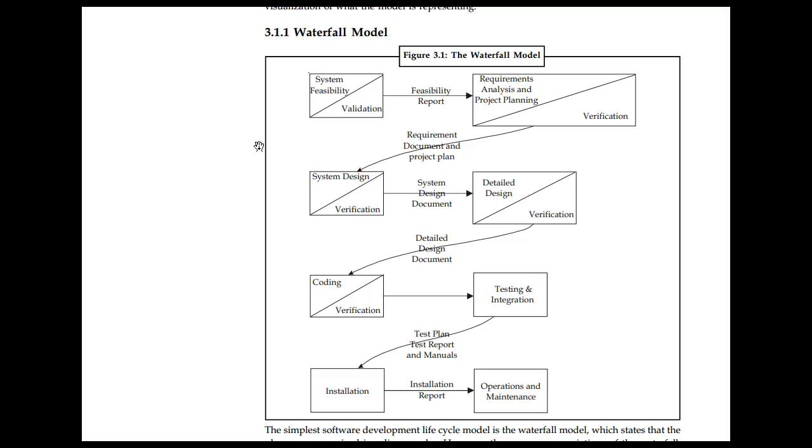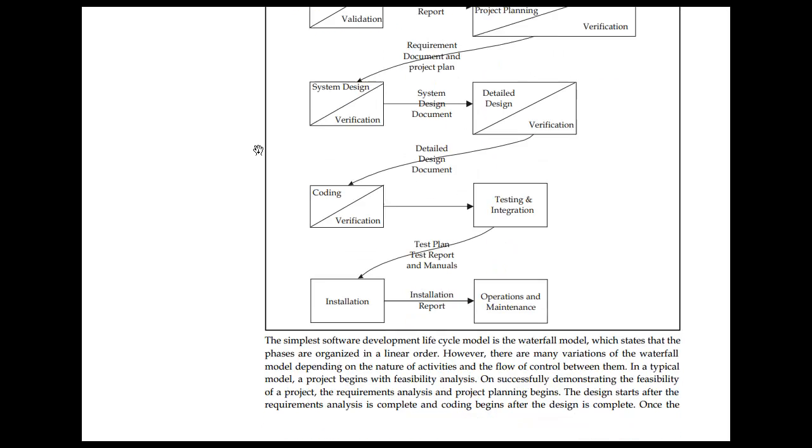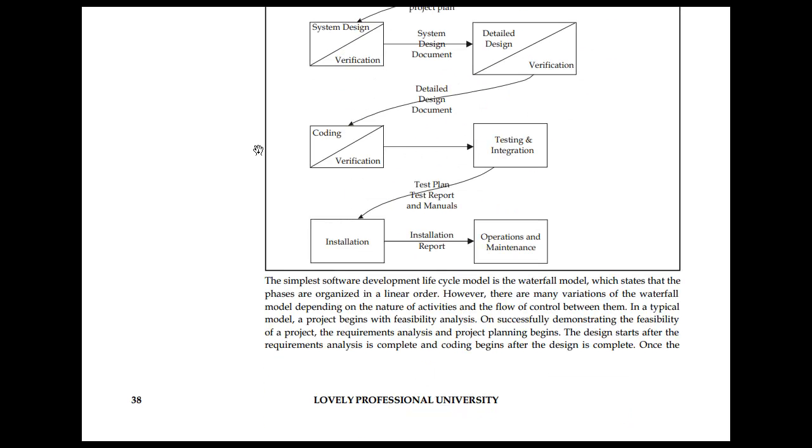Feasibility and validation we start with. Requirement is the second part with verification, requirement document and project. You can draw the same diagram with squares and cancelled squares or squares with two triangles. In that way you can do a lot of things that have system design, detail design, testing, integration and so on. The simplest development is the waterfall model which states that it is organized in a linear manner. However, there are many waterfalls present depending on that. That is the simplest one.